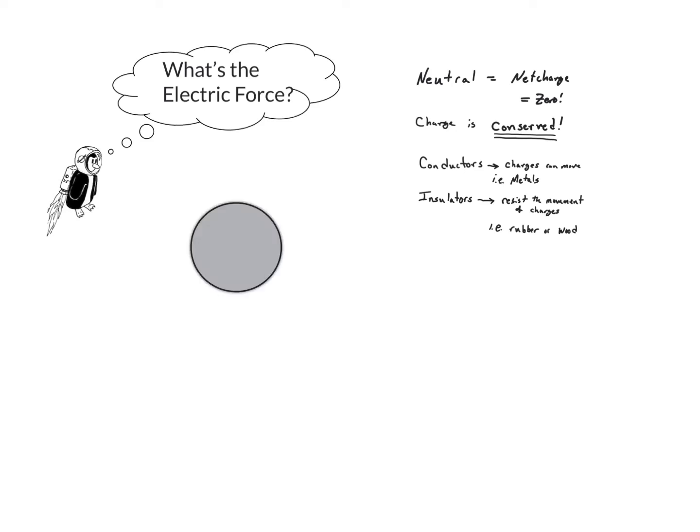Let's say you happen to have a metal sphere lying around as one does. Now, the sphere is made of a lot of different electrons and protons, but the total charge is zero because all the electrons and all the protons cancel each other out.